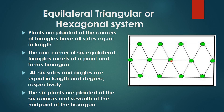All six sides and angles of the hexagon are equal in length and degree respectively — contrary to the triangular system. In the hexagonal or equilateral triangular system, all six angles of the hexagonal system also remain equal in degree. Six plants are planted at the six corners of the hexagon, and the seventh plant is placed at the middle point of the hexagon. So there are six plants at the six corners and one at the center of the hexagon.